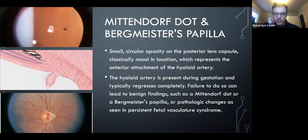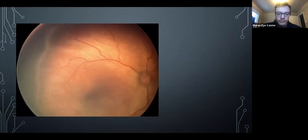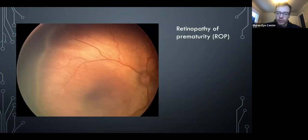To a smaller extent, incomplete regression of the primary vitreous or hyaloid artery gives you a Mittendorf dot or Bergmeister papilla.